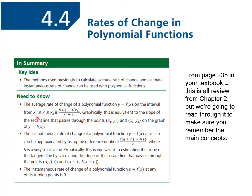Average rate of change is your slope between two points. So x1 is your first point and x2 is your second point, and you sub into your slope formula, which is y2 minus y1. Graphically, this is equivalent to the slope of a secant line passing through these two points.